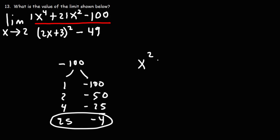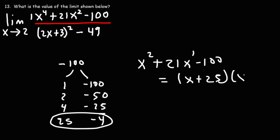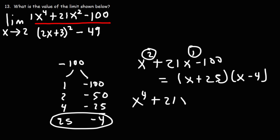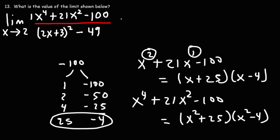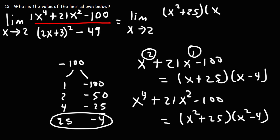Now, typically when dealing with most trinomials you'll see expressions like x plus 25 times x minus 4. However, notice that the exponents are doubled — it's 4 and 2 instead of 2 and 1. So when we factor it, we're going to get the square root of x to the 4, which is x squared. This trinomial can be factored as x squared plus 25 times x squared minus 4. So right now we have the limit as x approaches 2 of x squared plus 25 times x squared minus 4.